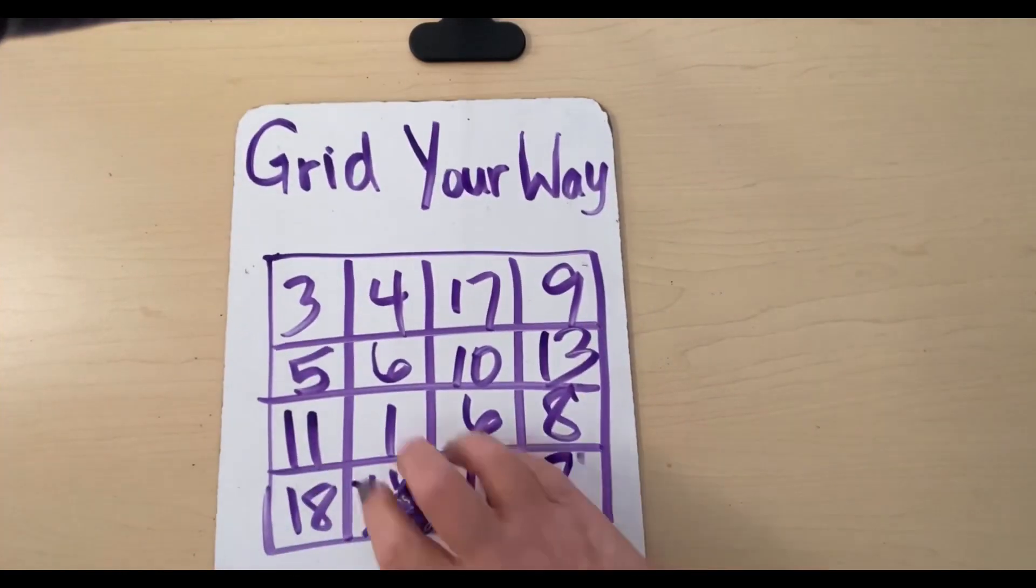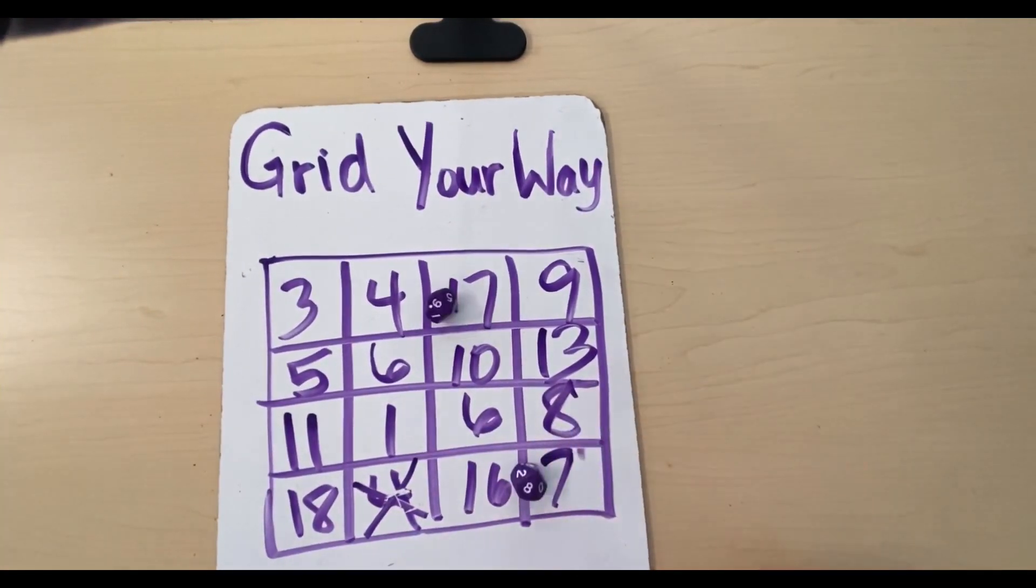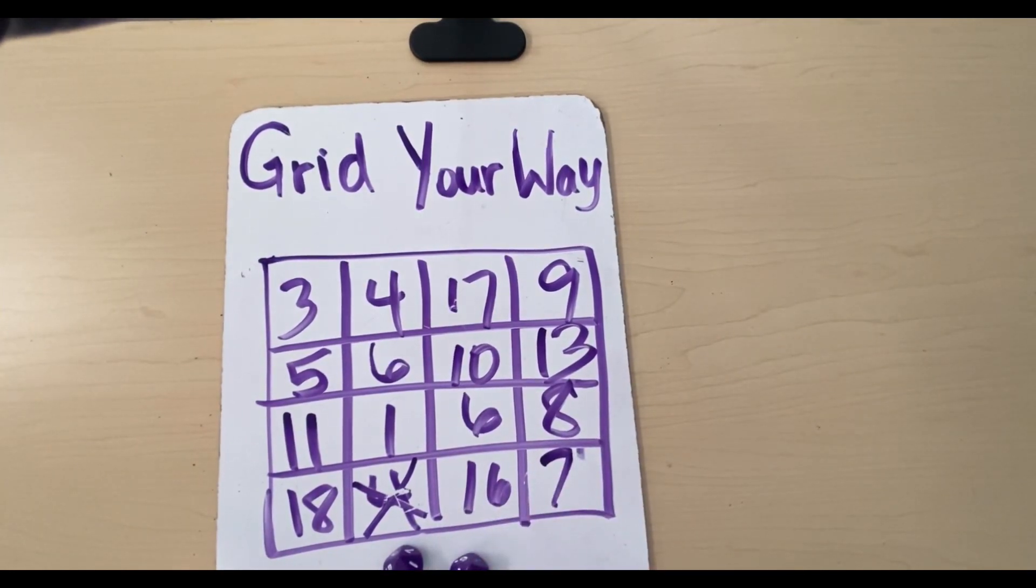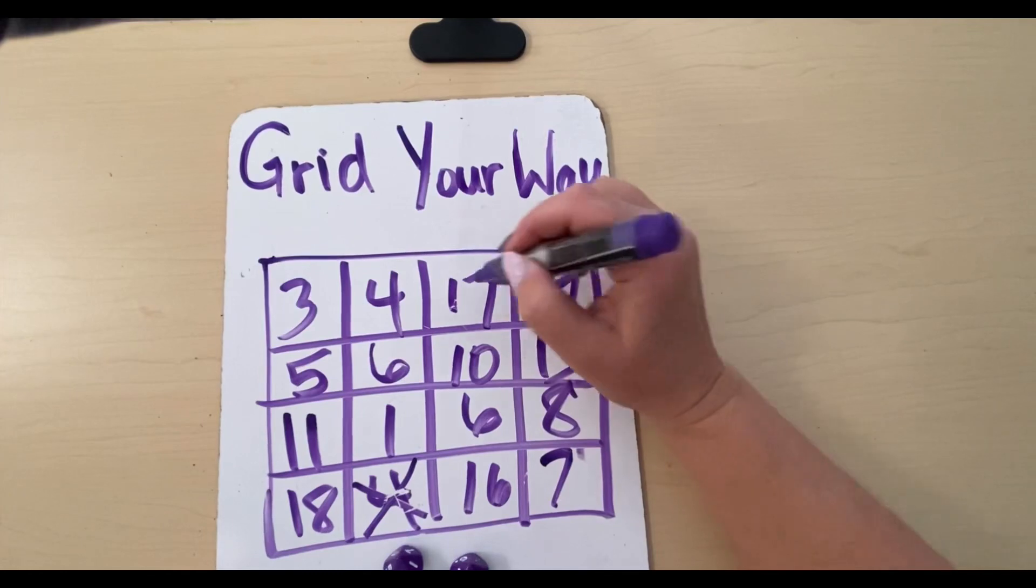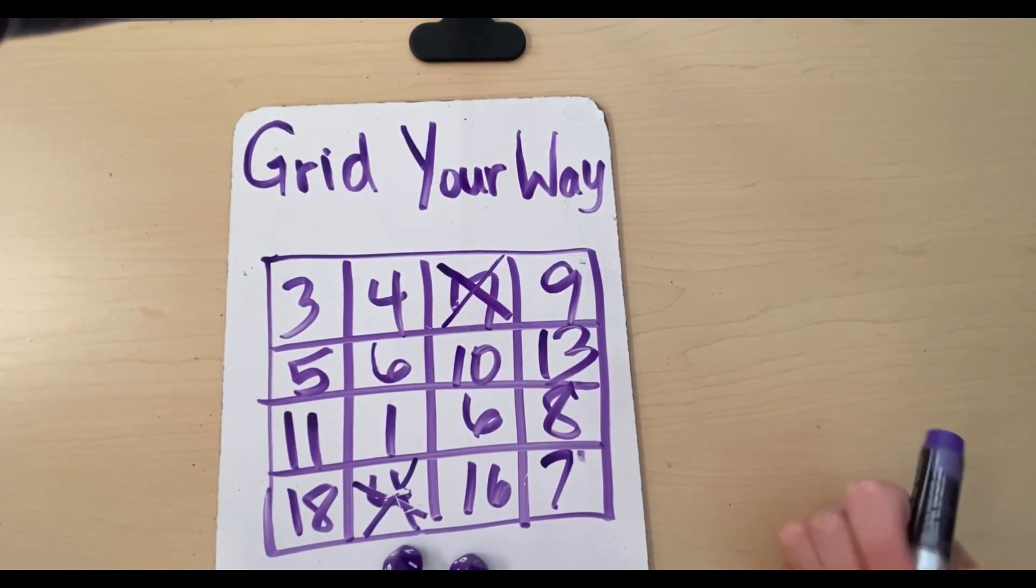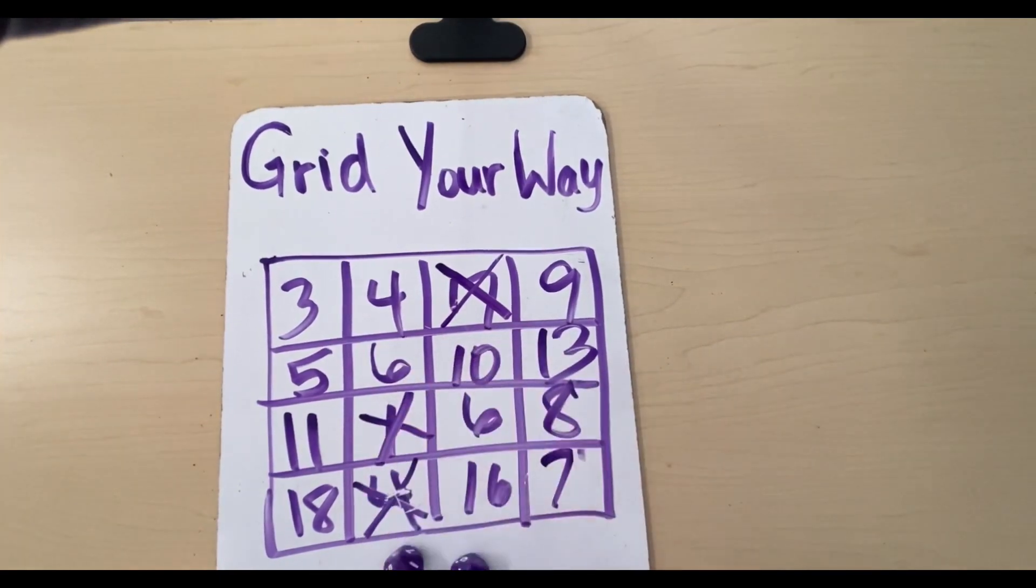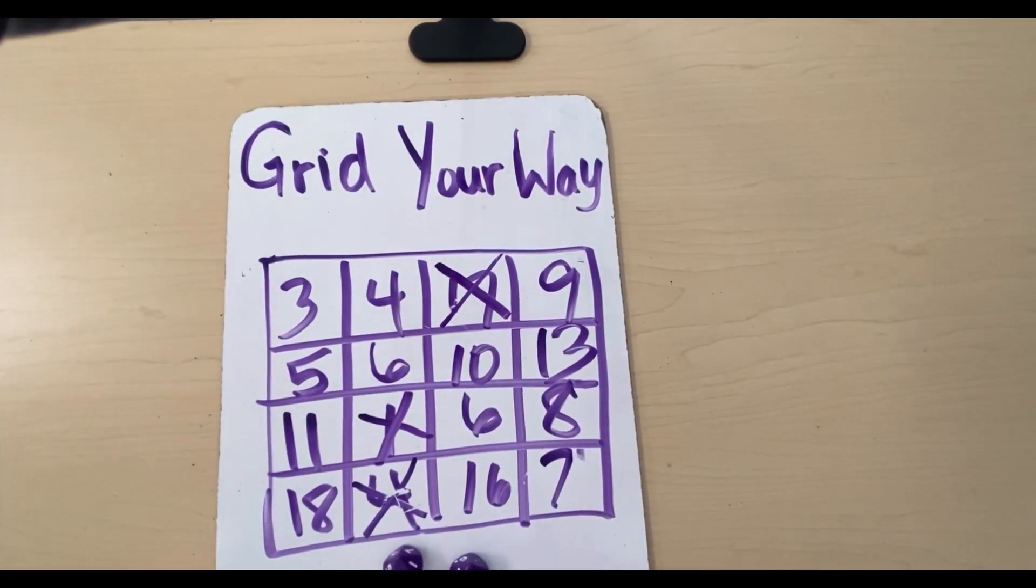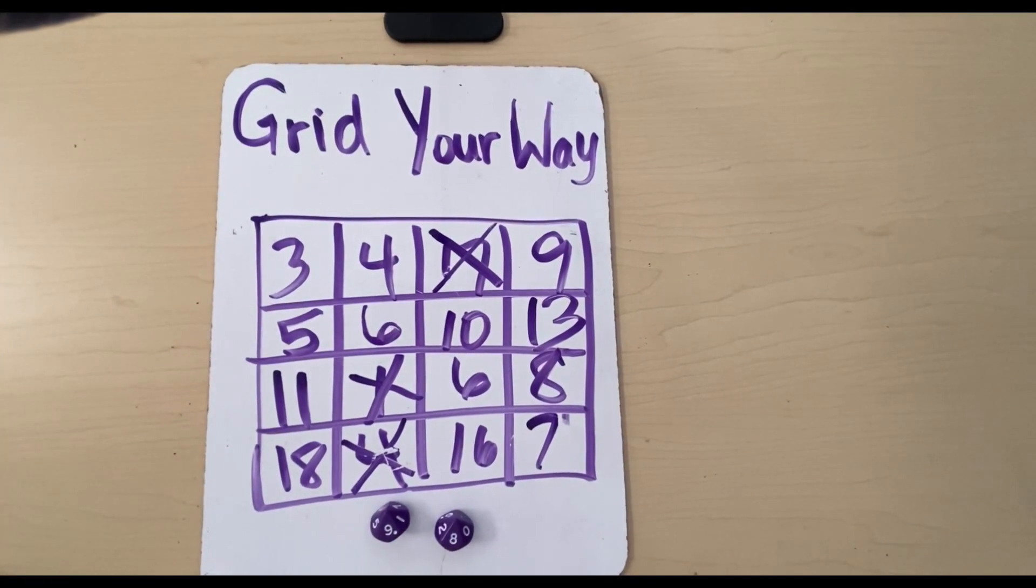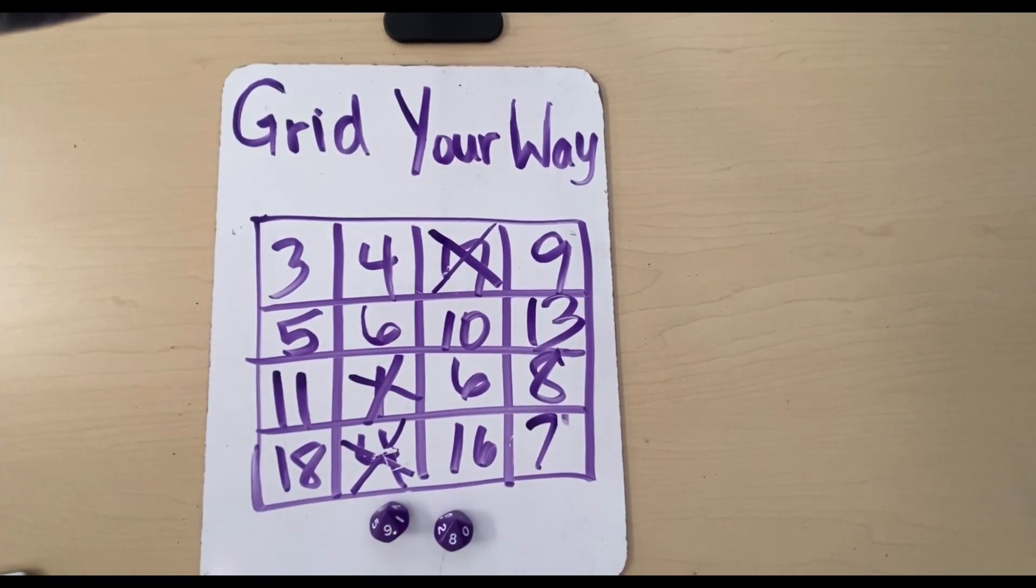Now my turn again. Oy, nine and an eight. So seventeen. Nine plus eight is seventeen. I love my nines there, it looks like. Nine take away eight is one. All right, but I do not have three in a row yet. So play continues back and forth until someone gets three in a row to win.